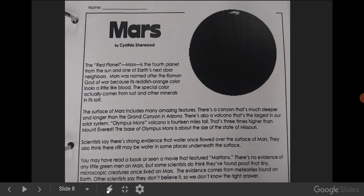You may have read a book or seen a movie that features Martians. There's no evidence of any little green men on Mars, but some scientists do think they found proof that tiny, microscopic creatures once lived on Mars. The evidence comes from meteorites found on Earth. Other scientists say that they don't believe it, so we don't know the right answer.